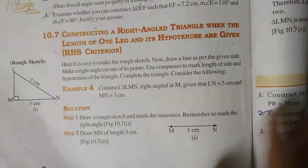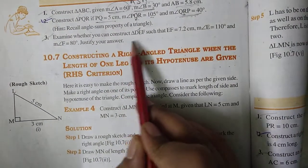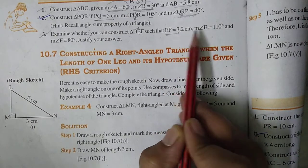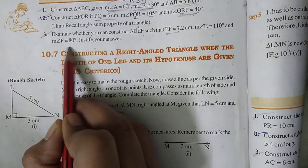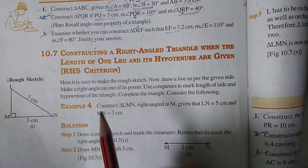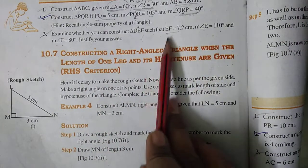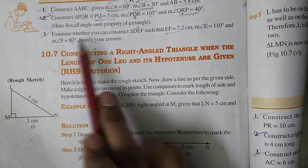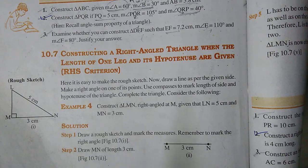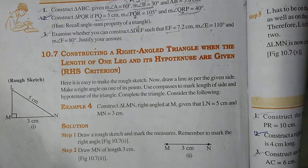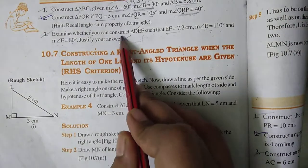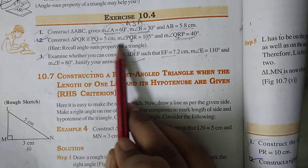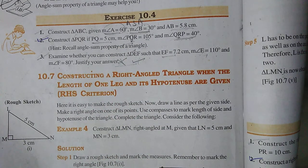Question 3: examine whether you can construct triangle DEF where EF = 7.2 cm, angle E = 110 degrees, and angle F = 80 degrees. The answer is no — because the sum of these two angles alone is 190 degrees, which exceeds 180 degrees. The triangle angle sum property states all three angles must sum to 180 degrees, so this construction is impossible. Just write the reason — no construction needed.